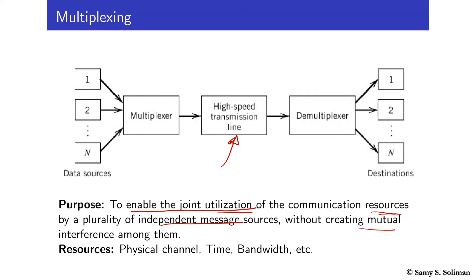So that at the receiving side I can demultiplex the signal and deliver to each destination the required signal. The shared resource we are talking about could be the physical channel itself — the transmission media — whether I'm talking about wired media or wireless media. It could also mean the time resource or the bandwidth resource.